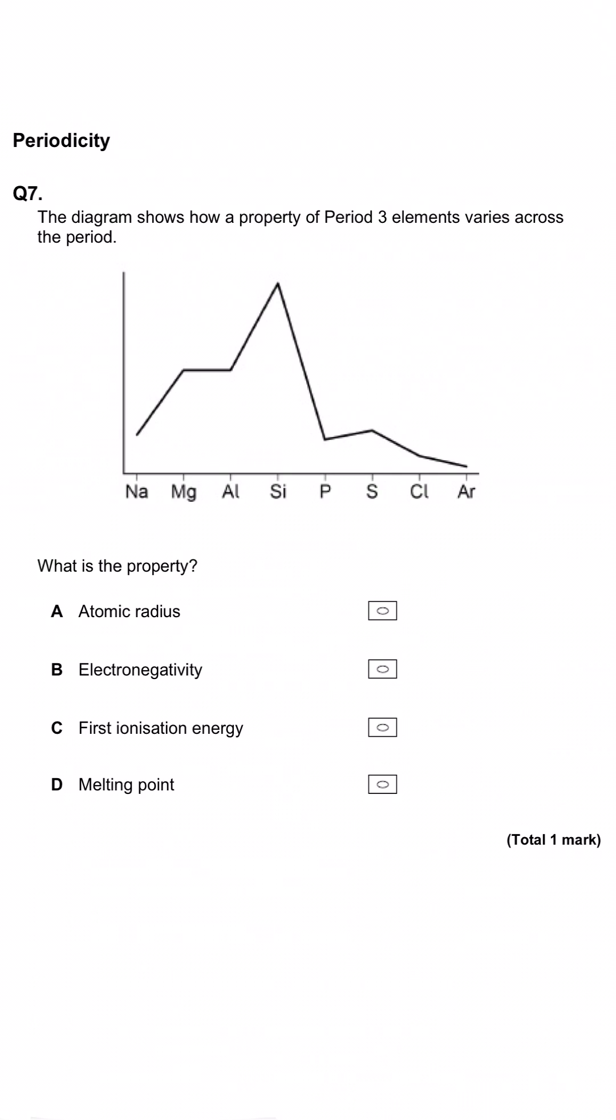The diagram shows how a property of period 3 elements varies across the period. What is this property?